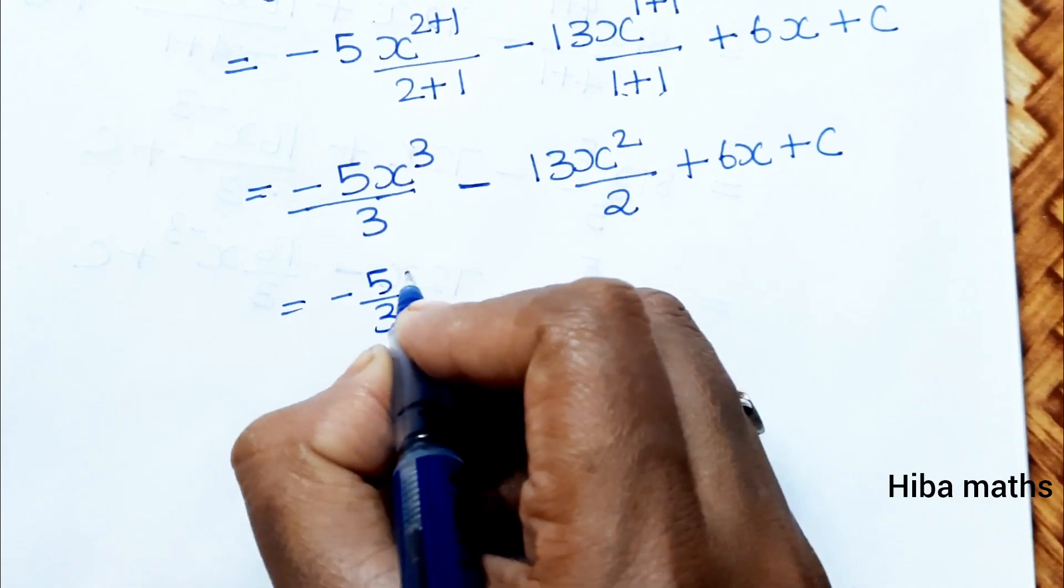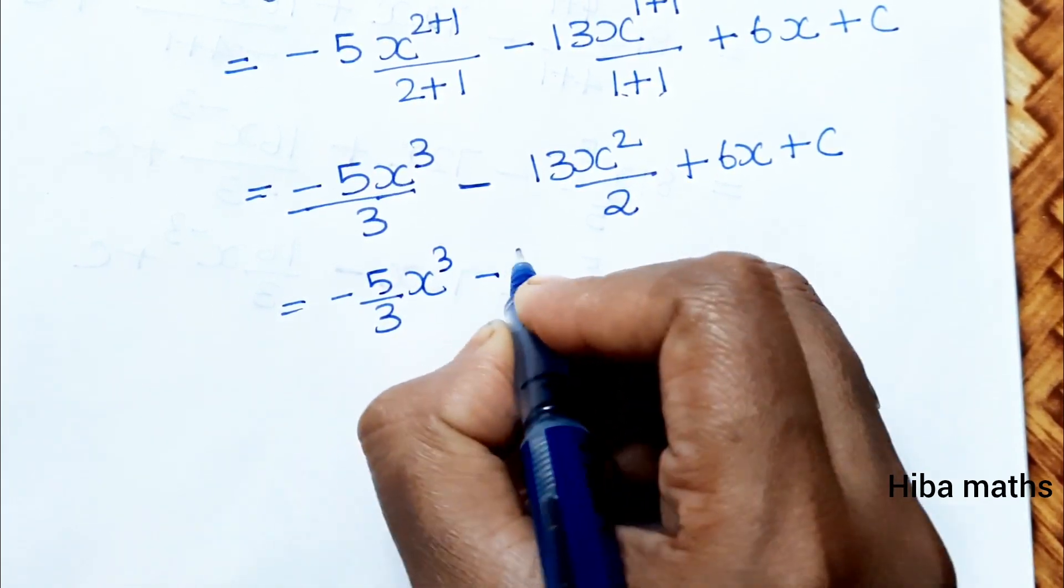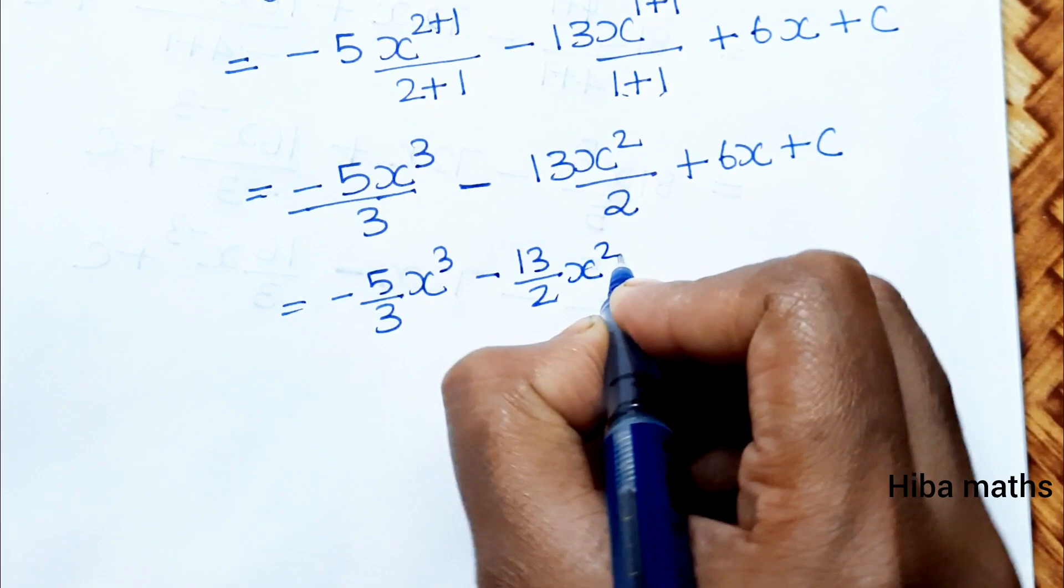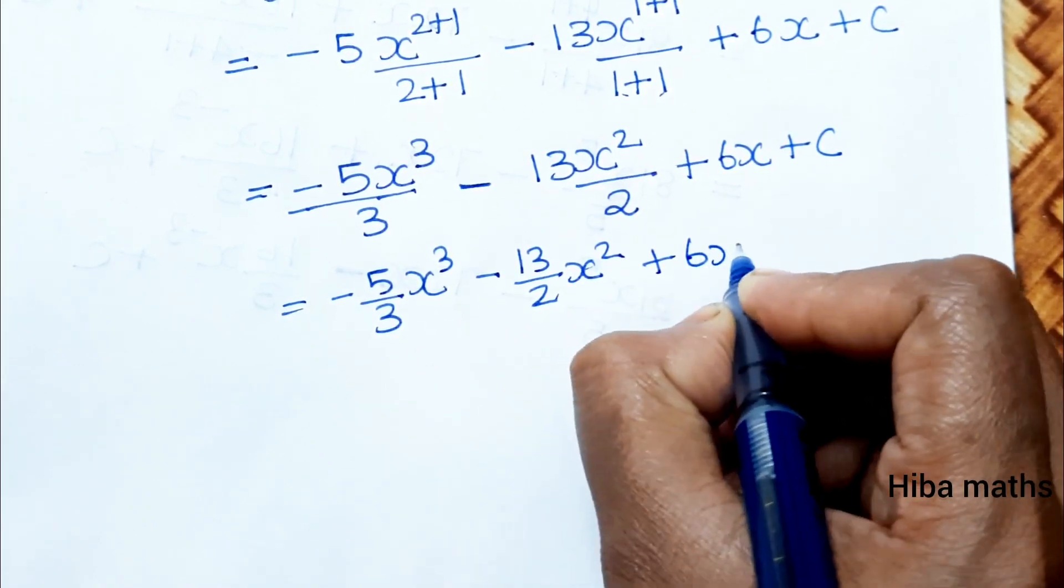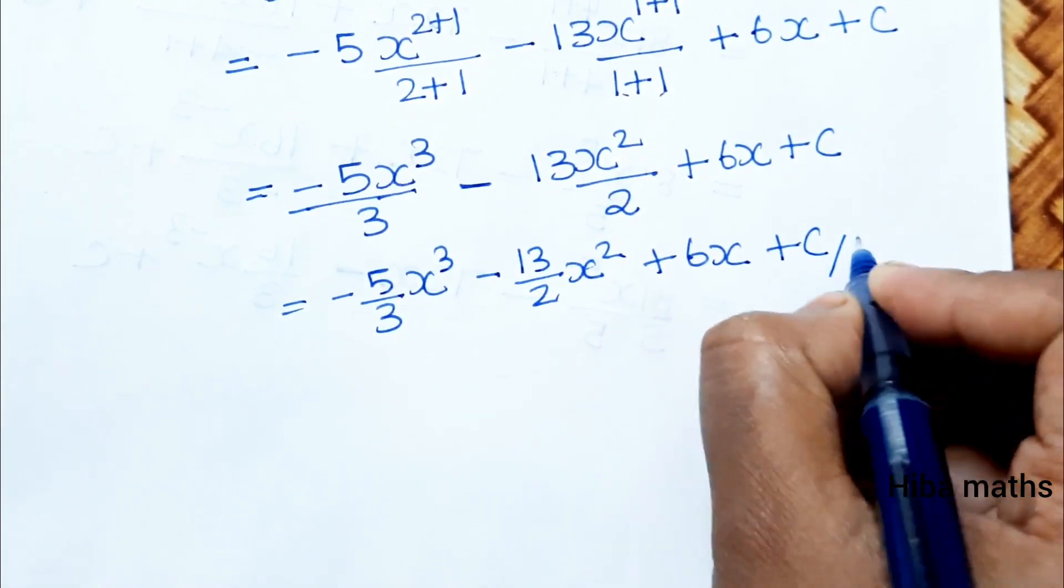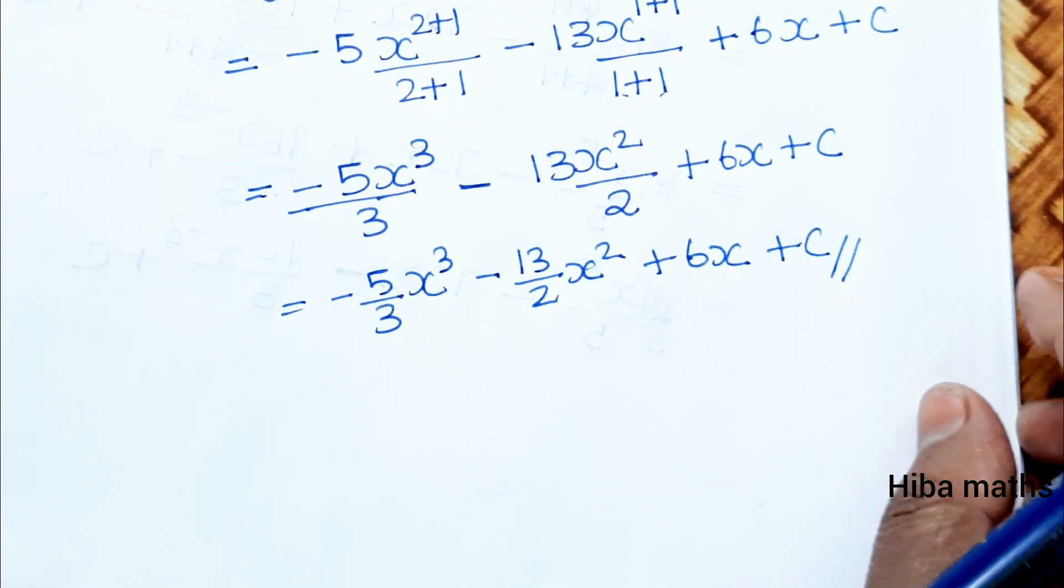Simplifying: -5/3 x³ - 13/2 x² + 6x + c. Understand? Thank you so much for watching.